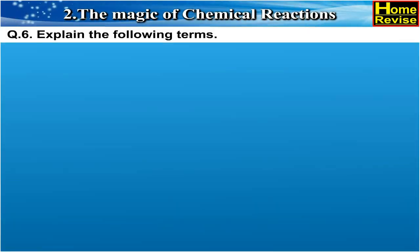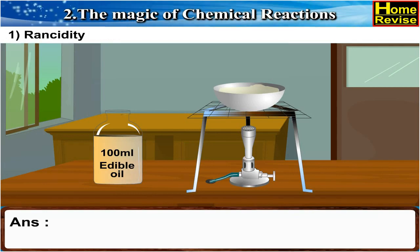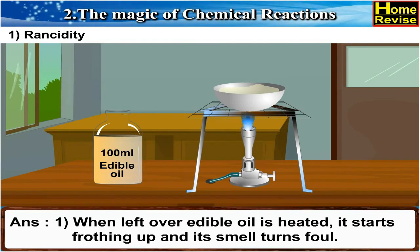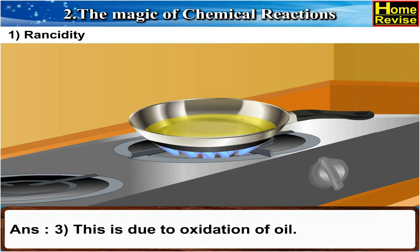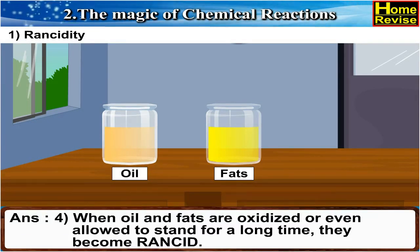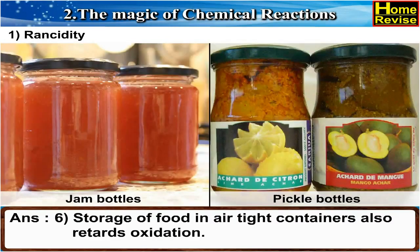Question 6: Explain the following terms. 1. Rancidity. Answer: When leftover edible oil is heated, it starts frothing up and its smell turns foul. If food is cooked in this oil, its taste changes. This is due to oxidation of oil. When oil and fats are oxidized or even allowed to stand for a long time, they become rancid. Antioxidants are used to prevent oxidation of food containing fats and oils. Storage of food in airtight containers also retards oxidation.